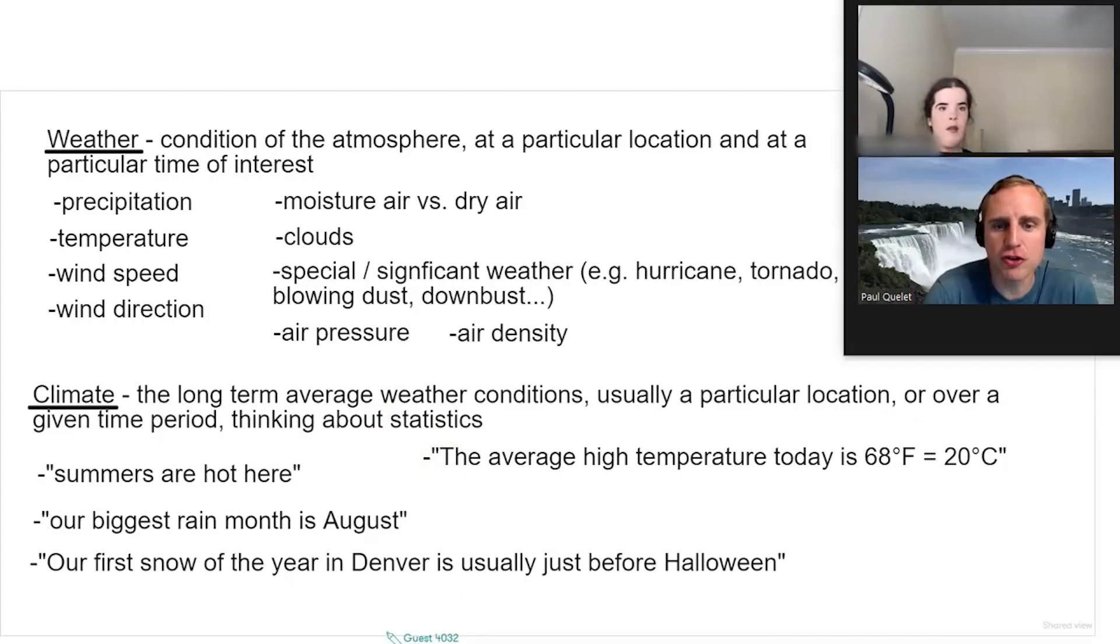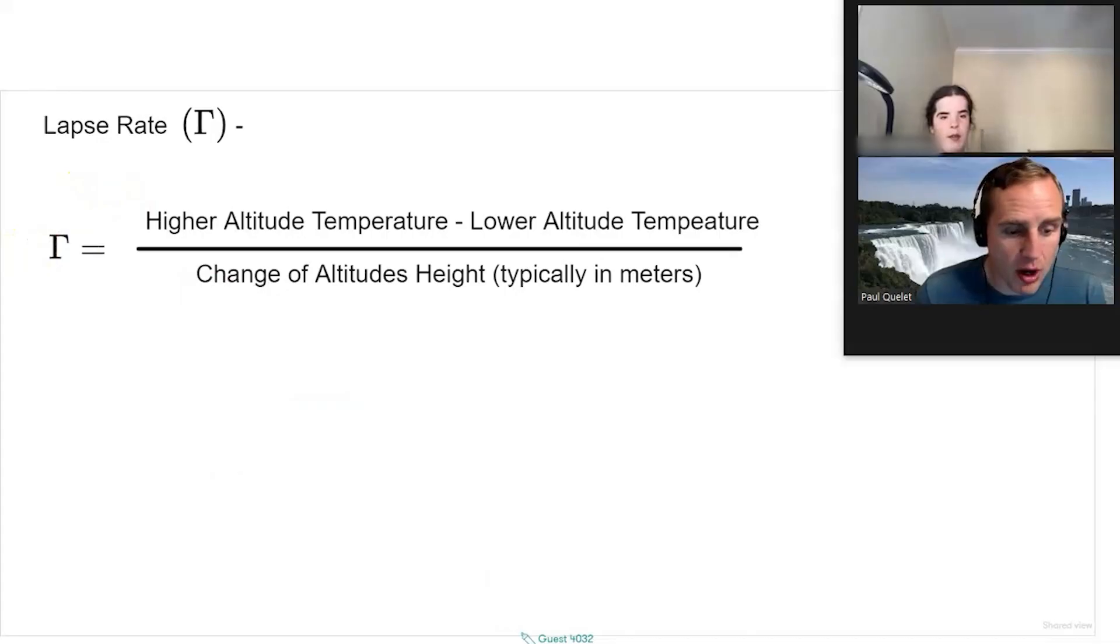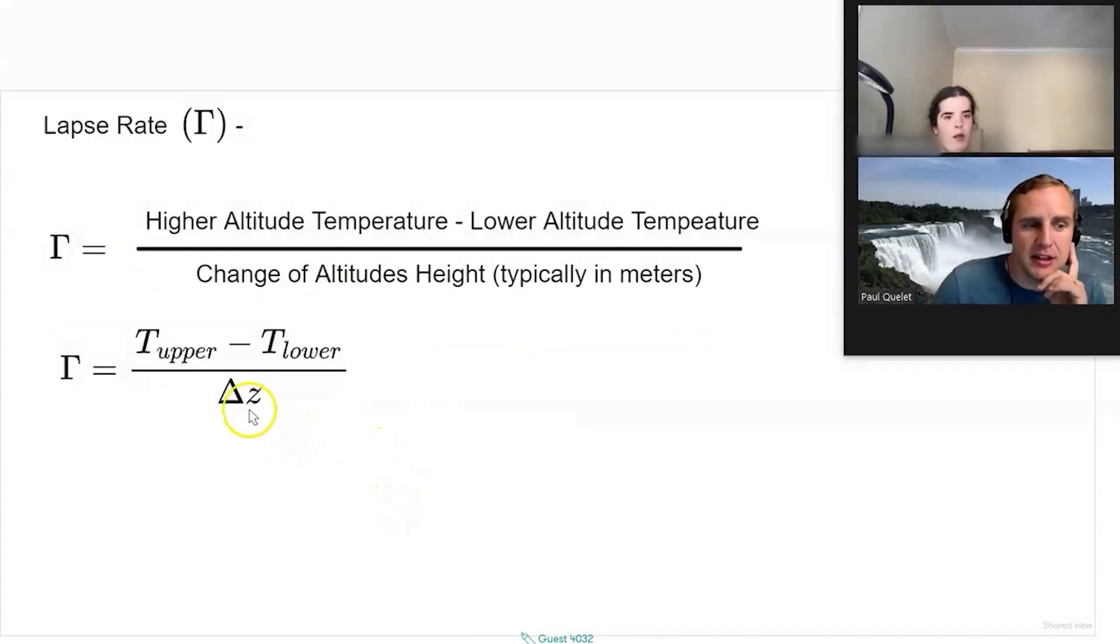There's a nice equation that relates air pressure, air density, and temperature together. So if you wanted to write this more compactly, and what I mean by compactly is typically in science, we want to use symbols for like a shorthand. Okay, so this is typically how you'll see the equation as well.